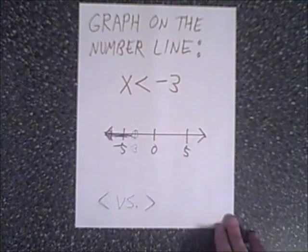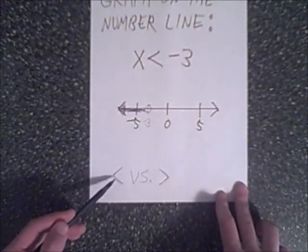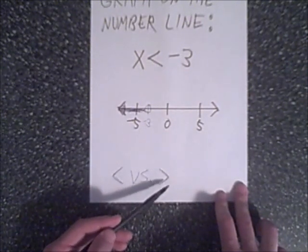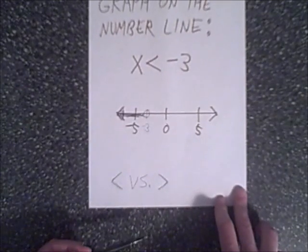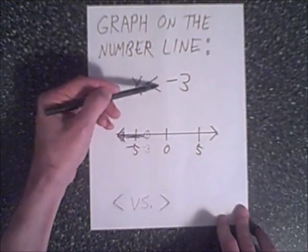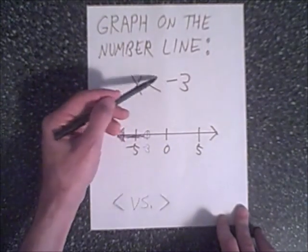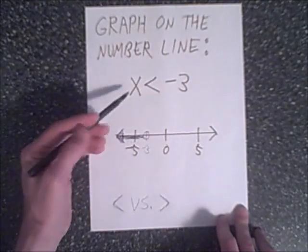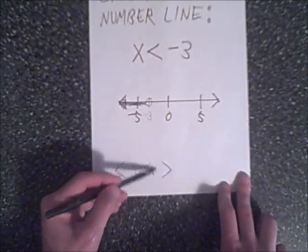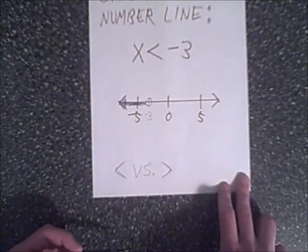Some people get confused whether it's less than or greater than. The less than sign points to the left; the greater than will point to the right. A helpful tip: the gap on one side of the inequality symbol is bigger, so the bigger numbers are on the side of the bigger gap. For less than, the bigger numbers are on the left and smaller values on the right.